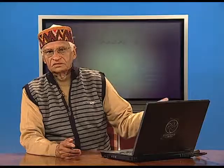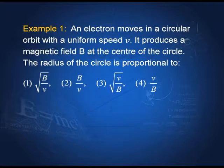These examples have been taken from various sources; some are from competitive examinations such as NEET. These examples will illustrate how to apply the knowledge we have acquired to various problems. Example 1: an electron moves in a circular orbit with uniform speed v. It produces a magnetic field B at the center of the circle. The radius of the circle is proportional to one of the given options.